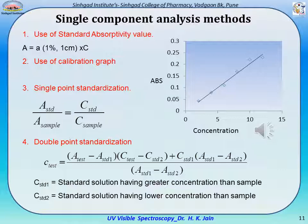In the double point standardization method, absorbances of a standard solution at two different concentrations are determined. At the same time, the absorbance of the test sample is also determined. Using the formula for double point standardization, the concentration of the test sample can be calculated.